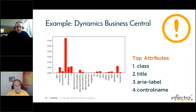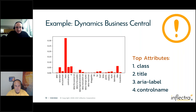Looking at a concrete example — Microsoft Dynamics Business Central — same problem, even in a B2B internal application. Looking at the distribution of attributes, class is everywhere. There's aria-label and title, which are actually quite good. Control name might be okay. But the ratio is stark — maybe five or six are classes and the rest much, much lower. The only things you're likely to have are probably an ID and a class, and that might be it.